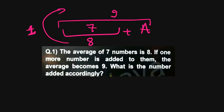The average is increased by 1. So 1 is added to each of the existing numbers — that's 7 added in total. Then 9 is also added for the new average position. So the number will be 16.